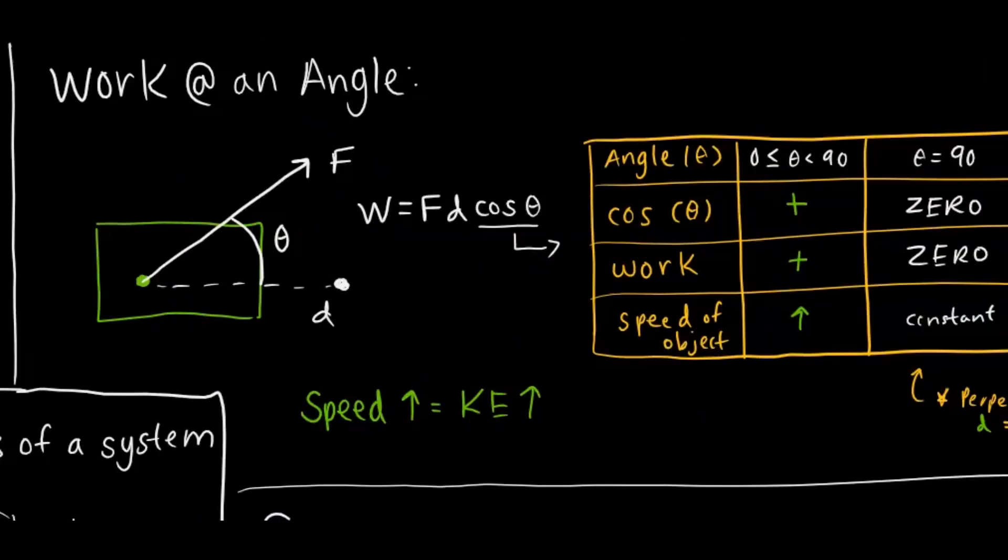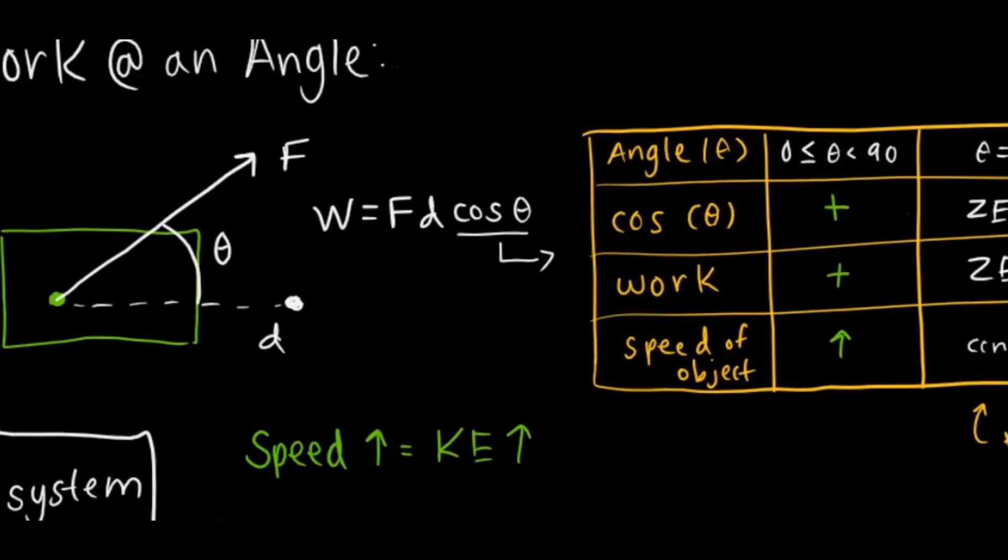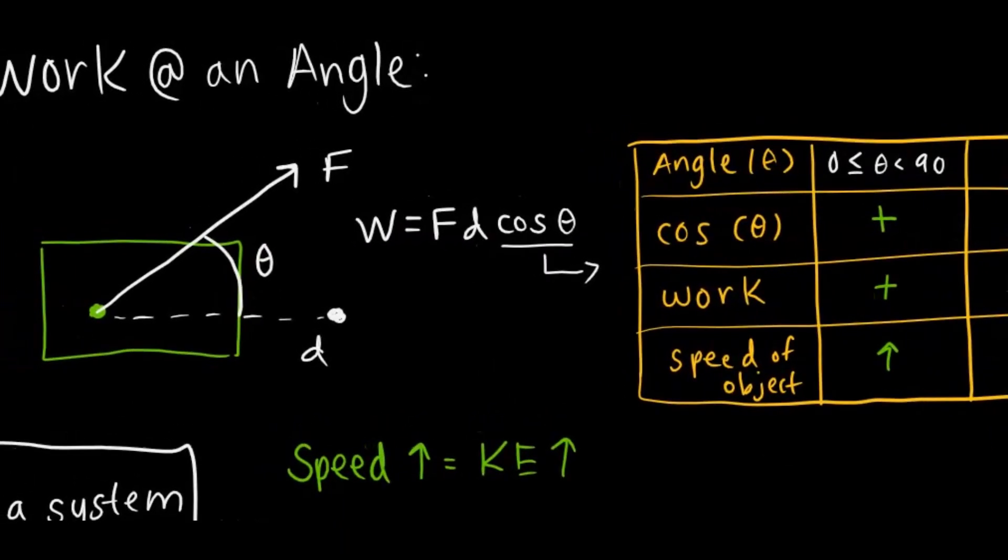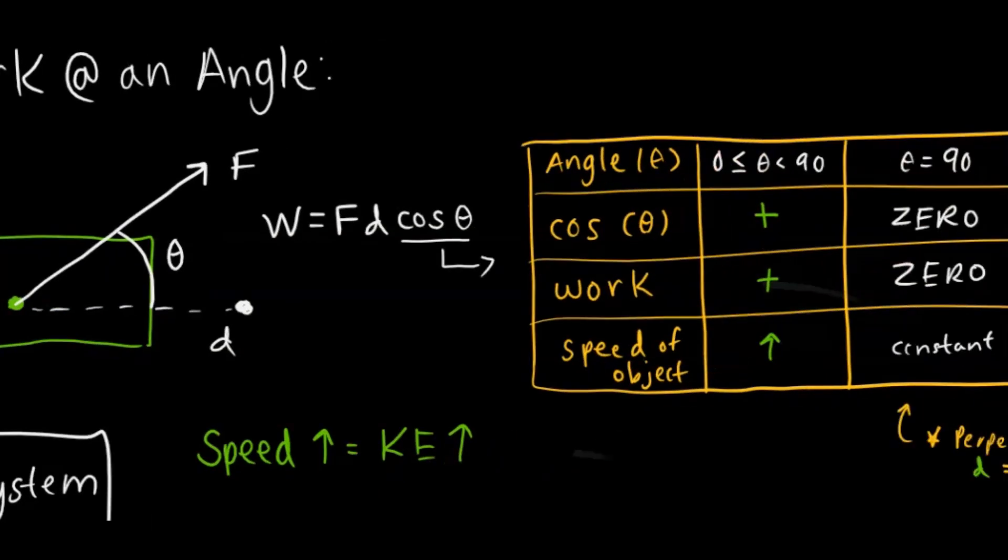So now let's talk about work at an angle, because when you have work, say you have a box or something and you're pulling it with a rope or a string or something, that work is not going to be evenly distributed. So that entire force is going to be acting in components. And that's a big part of physics where you have to observe things from a component perspective. But now the equation changes slightly. So now instead of work equals force parallel times displacement, you're going to have work equals force times displacement times cosine theta.